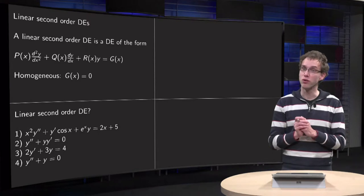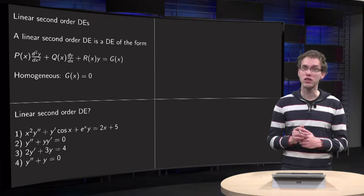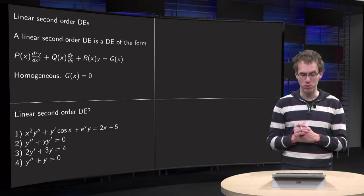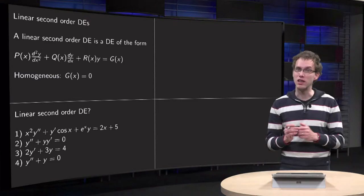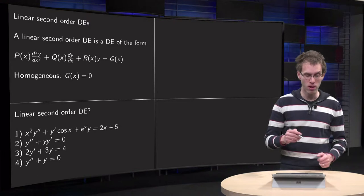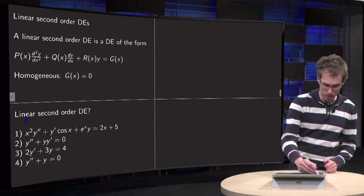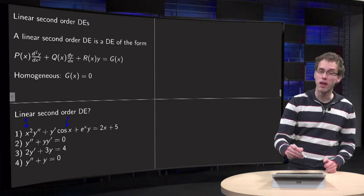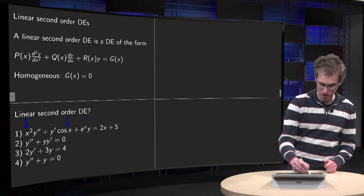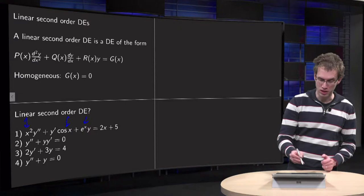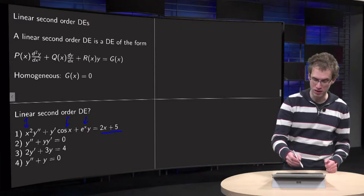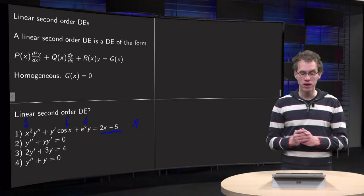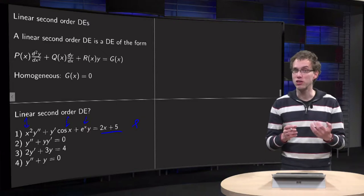Let's look at a few examples. The first one: x² y″ + y′ cos(x) + e^x · y = 2x + 5. Is this linear or not? It looks horrible, but in this case p(x) = x², q(x) = cos(x), r(x) = e^x, and the right hand side g(x) = 2x + 5. So in fact, this one is linear.